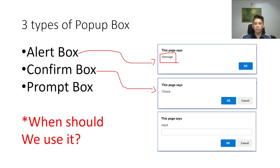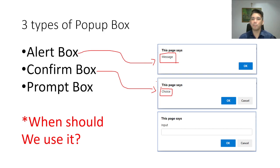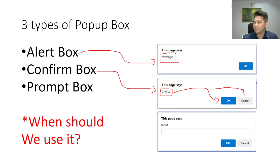The confirm box — when we use a confirm box, there's also a message, but the message usually presents a choice. We only have two options: it is either the user will click OK, or the user will click Cancel.